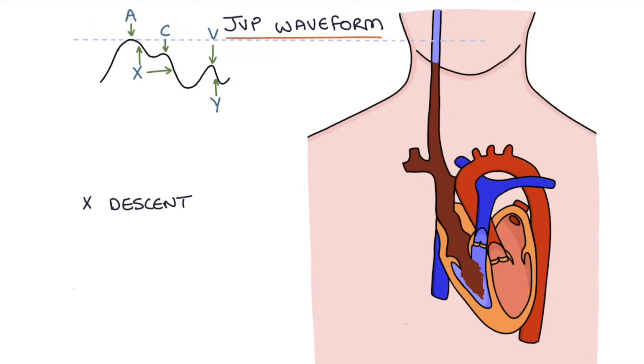The X descent is caused by relaxation of the atria, and the blood flows into the relaxed atria from the internal jugular vein. This causes a drop in the JVP. At the start of the X descent, there's also blood flowing from the atria into the ventricle to complete the ventricular filling, and this also leads to a fall in the JVP.